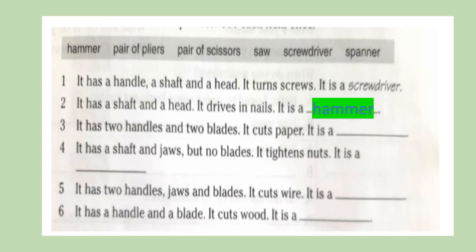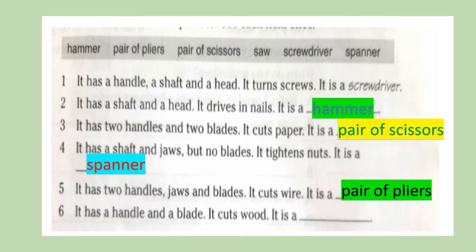Okay, now let's check the answers together. Number three, what is the answer? Very good. Pair of scissors. Number four, excellent, spanner. Five, pair of pliers. And finally, number six, saw. Very good.